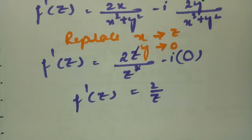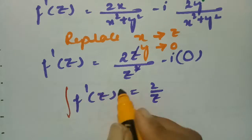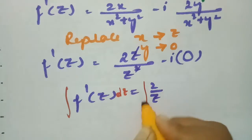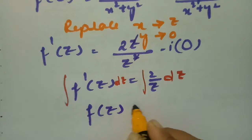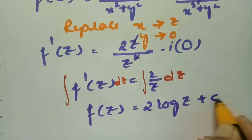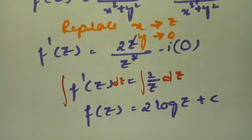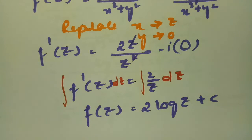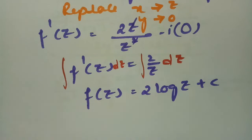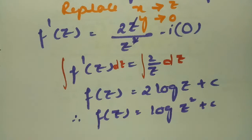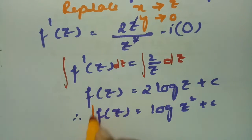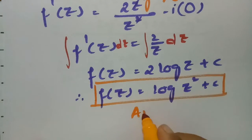Cancelling one z, f'(z) = 2/z. Integrating both sides, f(z) = 2·log(z) + c. This is our required analytic function.